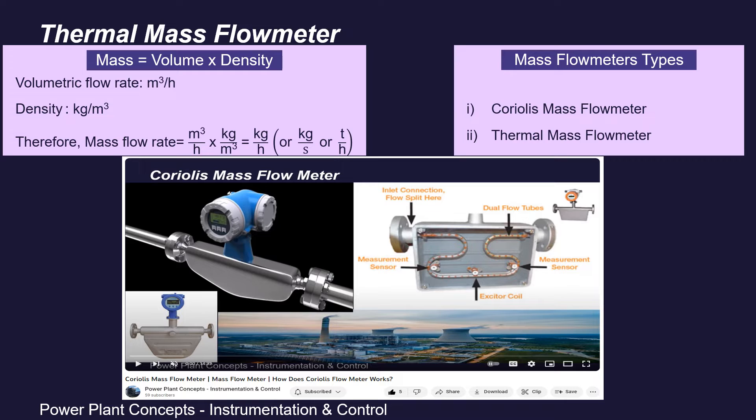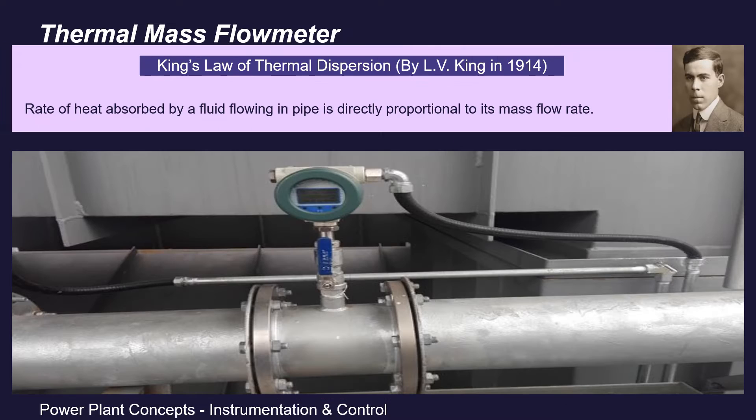Friends, there are two types of mass flow meters. One is Coriolis mass flow meter, which we have already discussed in details in our previous session, and the second is thermal mass flow meter.